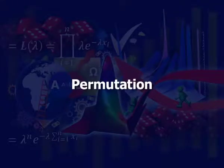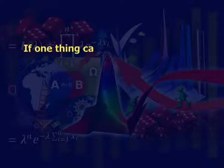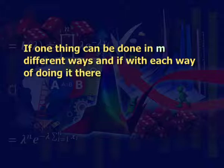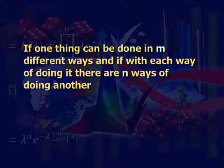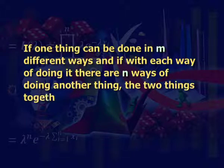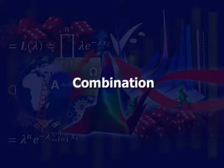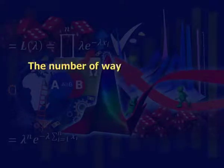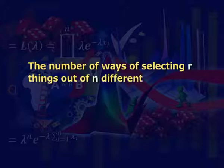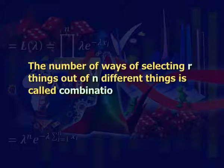Permutations can be explained as: if one thing can be done in m different ways, and with each way of doing it there are n ways of doing another thing, then the two things together can be done in m cross n ways. The number of ways of selecting r things out of n different things is called combination.